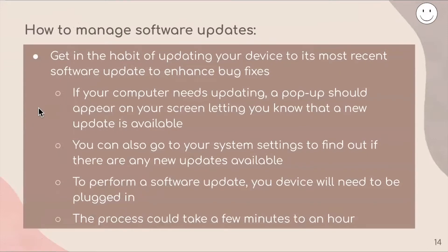To manage software updates, get into the habit of updating your device so it's at its most recent software to enhance bug fixes. If your computer needs updating, a pop-up should appear on your screen letting you know a new update is available. You can also go to your system settings to find out if new updates are available — for example, on Apple devices, go into Settings and beside the 'Software' category you will see a little notification; just click on it to see the information.